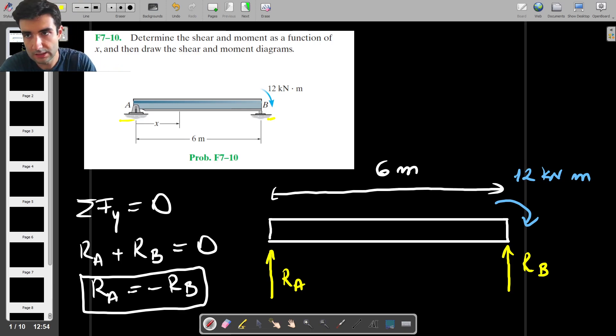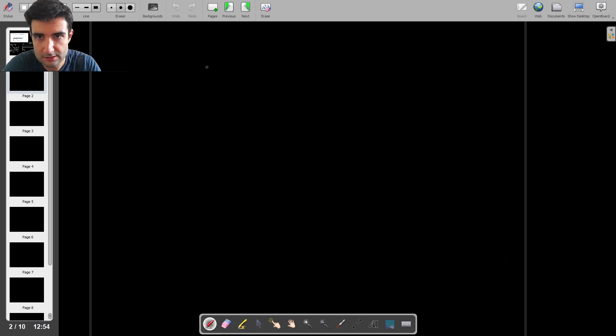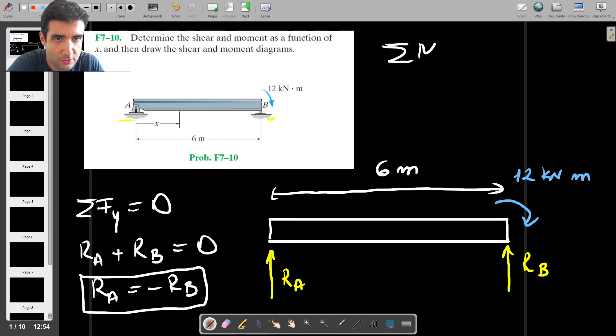The other thing is to consider the moments. Sum of moments about point A is going to be 0. So I'm going to take point A here, and I'm going to take moments about point A. We have the moment due to RB, which is counterclockwise. So we have RB multiplied by the moment arm, which is 6. And then we have the 12 kNm moment, which is clockwise. So that's going to be minus 12, and that's going to be equal to 0. So 6RB is going to be equal to 12.